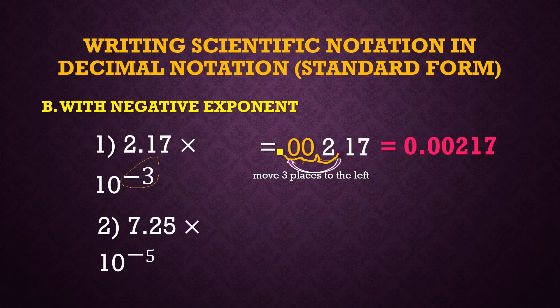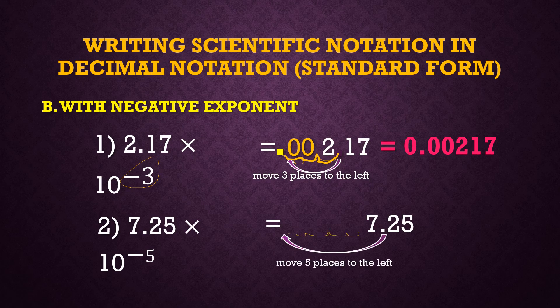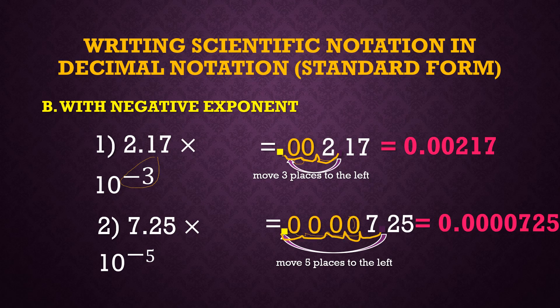For number two, 7.25 times 10 raised to negative 5: we start with 7.25 and move the decimal point 5 places to the left — 1, 2, 3, 4, 5 — putting zeros in the parts that have no digits. The simplified form is 0.0000725.